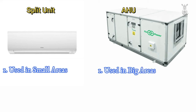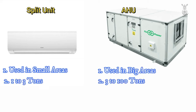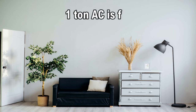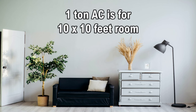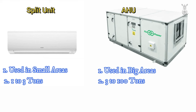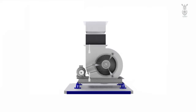The AC tonnage is decided by the size of the room. For example, 1 tonne AC is needed for a 10 by 10 feet room. The AHU tonne is also decided by the size of the area where it needs to be serviced. The size of the AHU depends upon the tonne of the AHU.